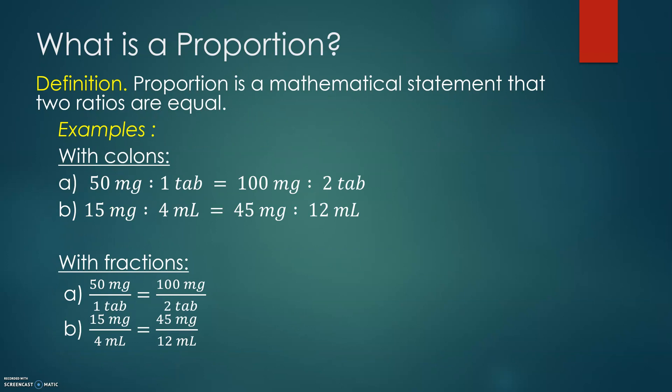Proportion. Proportion is a mathematical statement that says two ratios are equal, proportional. Examples of proportion: 50 milligram per one tablet equals 100 milligram per two tablets. You see how the proportionality between numbers is changing. We had 50 milligrams, now it's 100 milligrams, so we have an increase of two times, and one tablet quantity increased twice again, so we have two tablets. The same happens with 15 milligram to four milliliters. If 15 increased by three times to 45 milligrams, and 4 times 3 equals 12 milliliters for the solution. The same you can look at with fractions.